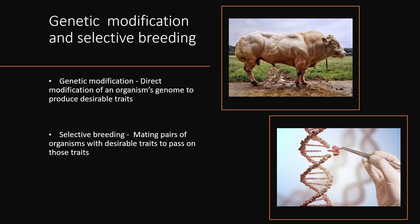Another issue with agriculture is the use of genetic modification and selective breeding. Genetic modification involves directly manipulating genetic information in an organism, and it is typically used to produce desirable traits — for example, fruit and vegetables that don't spoil as quickly.